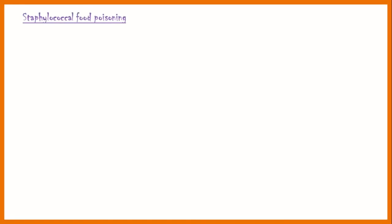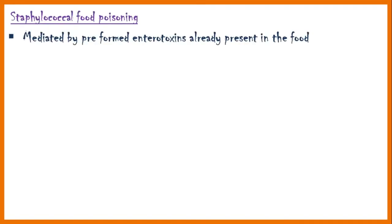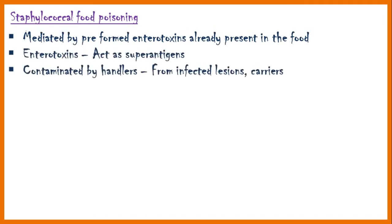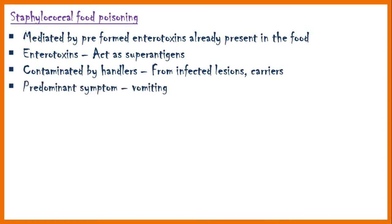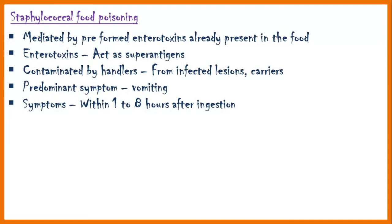Staphylococcal food poisoning is mediated by preformed enterotoxins already present in the food. These enterotoxins also act as superantigens. Food is contaminated by food handlers, who may be asymptomatic carriers or infected people with staphylococcal skin lesions. The predominant symptom is vomiting. Symptoms appear within 1 to 8 hours after ingestion of toxins, and they frequently cause outbreaks.